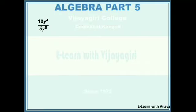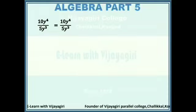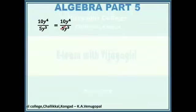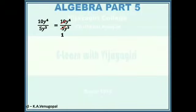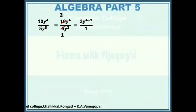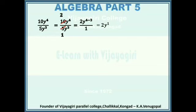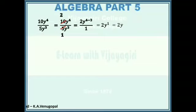10y to the power 4 by 5y to the power 3: numbers and index expressions are together and it is in fraction format. First we reduce the numbers — 5 and 10 have a common factor 5, so 5 goes into 5 once and into 10 twice. y to the power 4 by y to the power 3 gives y to the power 4 minus 3. This can be written as 2y to the power 1, and since dividing by 1 doesn't change the value, the answer simplifies as 2y.